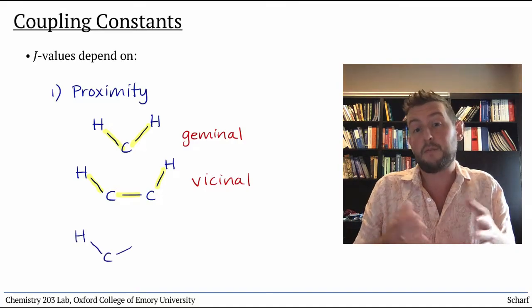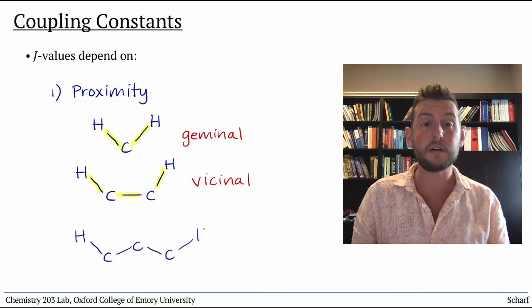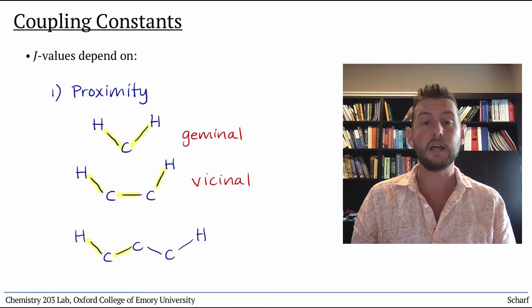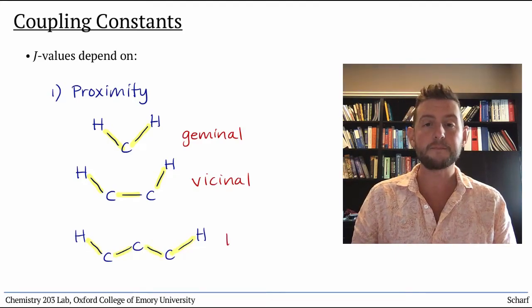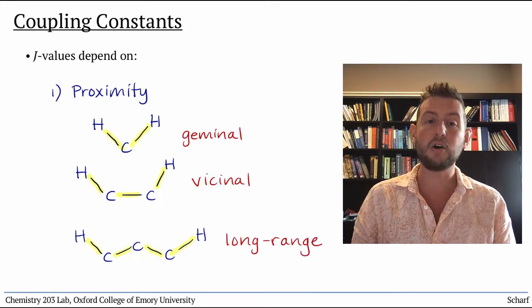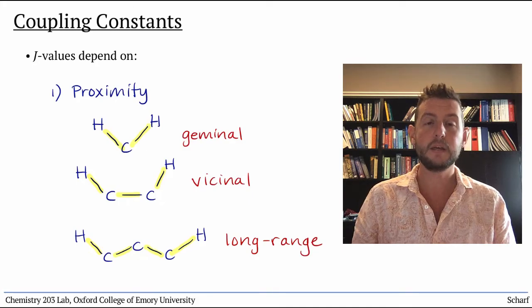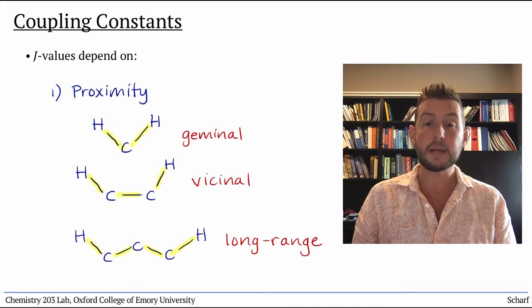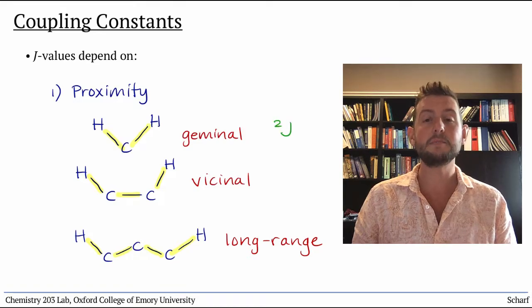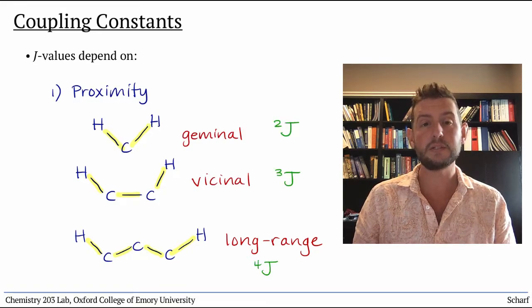Sometimes protons four, five, or even six bonds away can also cause coupling, though this is pretty rare. The number of bonds separating two coupled protons is sometimes seen as a superscript preceding the J.